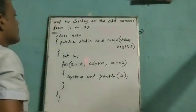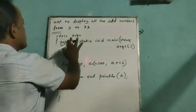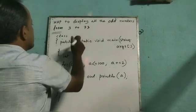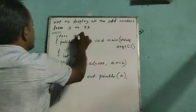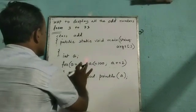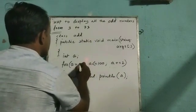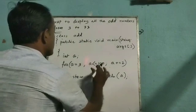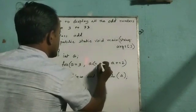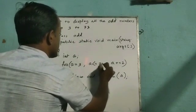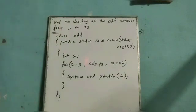This is another example. Here we are going to print odd numbers from 3 to 73. Name of the class we change, name it odd. a equal to 3, a less than equal to 73, a plus equal to 2, and the rest of the program remains the same.